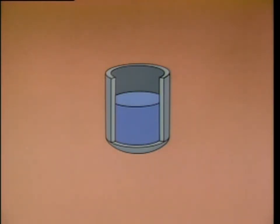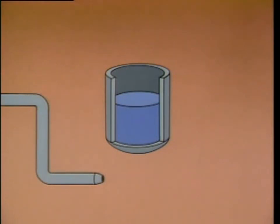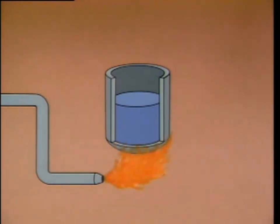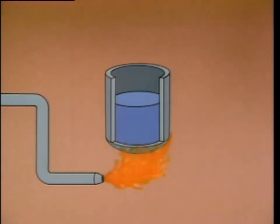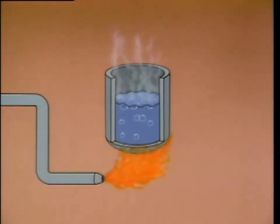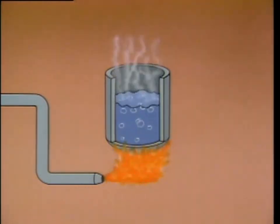We'll also add a pipe to provide a continuous supply of fuel to the combustion area — that is, the area beneath the shell. Heat from the flame satisfies the second requirement for steam production. As the shell heats up, heat is transferred from the shell to the water, and the water boils, producing steam.